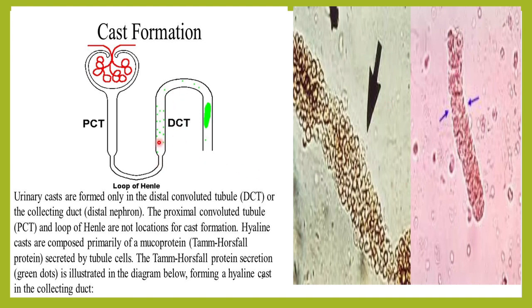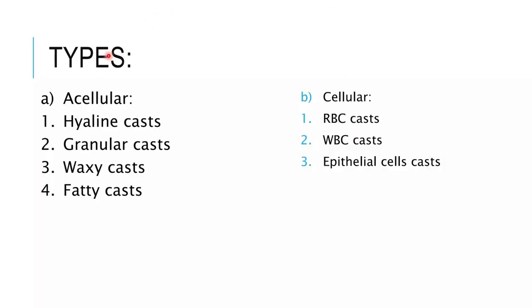As discussed in previous classes, casts are composed mainly of the Tamm-Horsfall protein, which forms the matrix of the cast. Sometimes cells are found on top of this protein matrix. Casts can be classified as cellular and acellular. Acellular casts — which have no cells — include hyaline cast, granular cast, waxy cast, and fatty cast. Cellular casts include RBC cast, WBC cast, and epithelial cell cast.